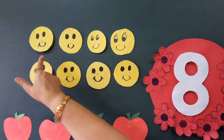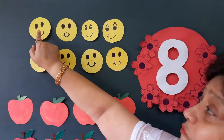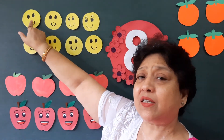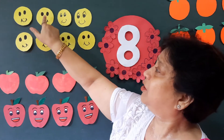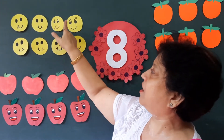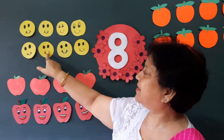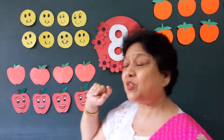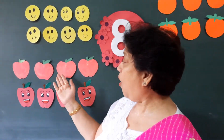Wow, smileys! We will count them and you will keep your finger. Ma'am has a finger — you will also count by keeping your finger. One, two, three, four, five, six, seven, eight. Eight smileys. How many smileys? Eight smileys.